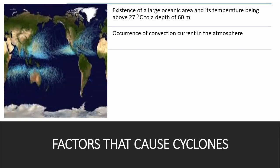Occurrence of convection currents in the atmosphere. Lighter or less dense warm particles in the atmosphere rise up while heavier or more dense cool air particles sink. Such movement creates circulatory patterns in the atmosphere, and this is known as convection currents. This occurs naturally and is a factor that causes cyclones.